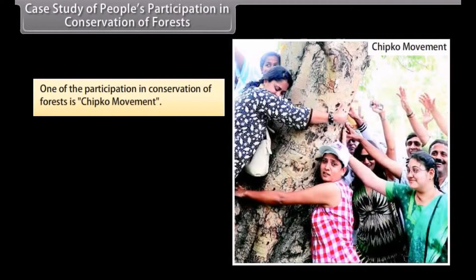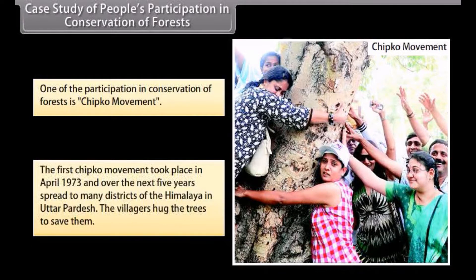Case study of people's participation in conservation of forests: One example is the Chipko movement. The first Chipko movement took place in April 1973 and over the next five years spread to many districts of the Himalayas in Uttar Pradesh. The villagers hugged the trees to save them.